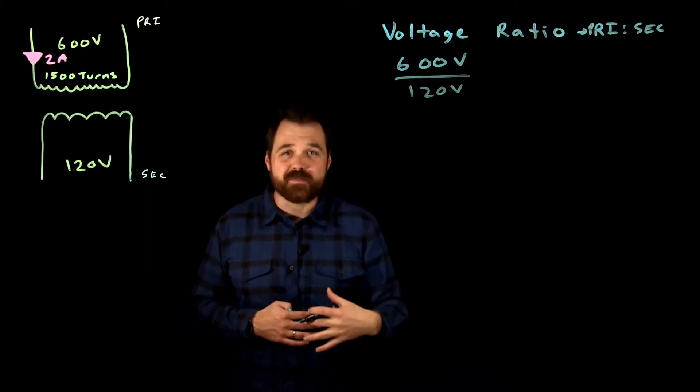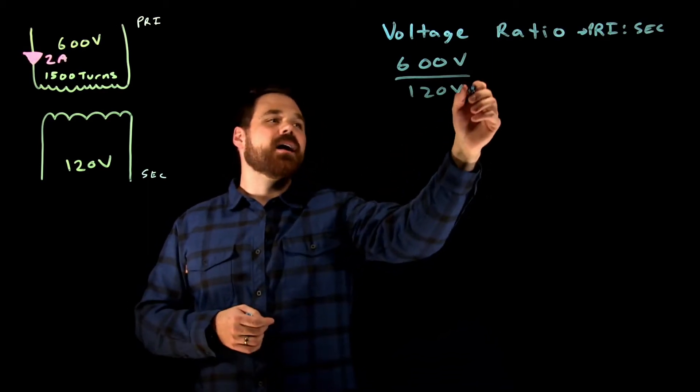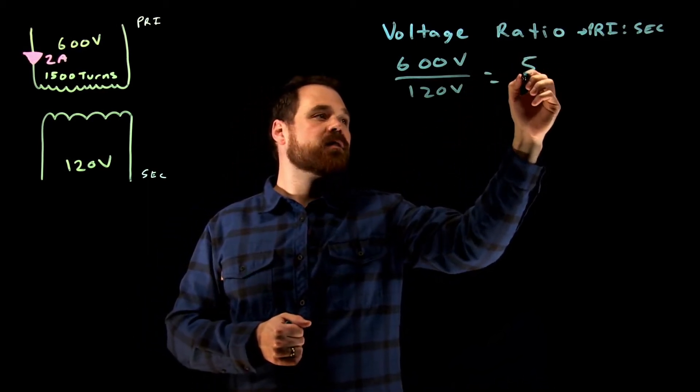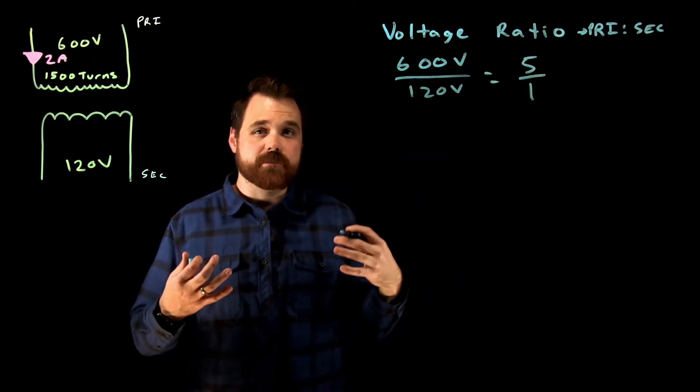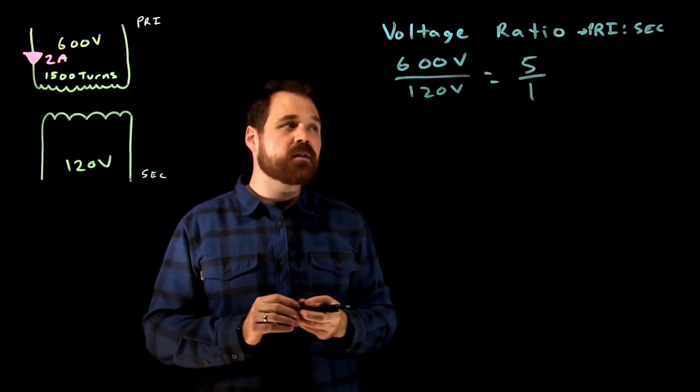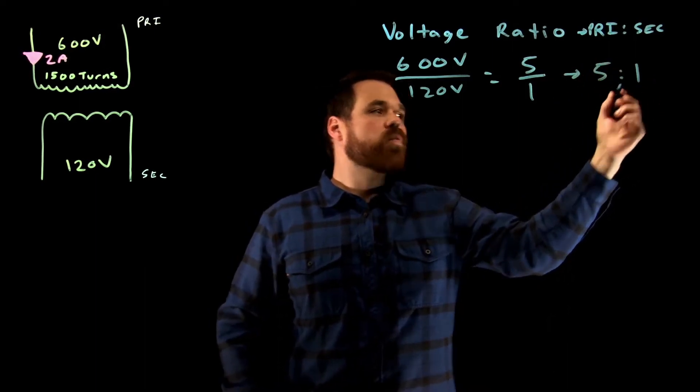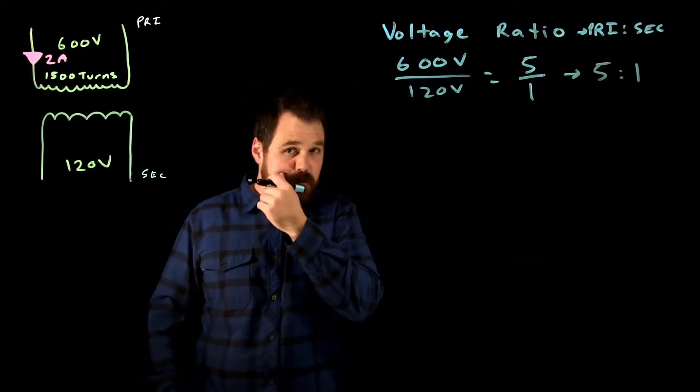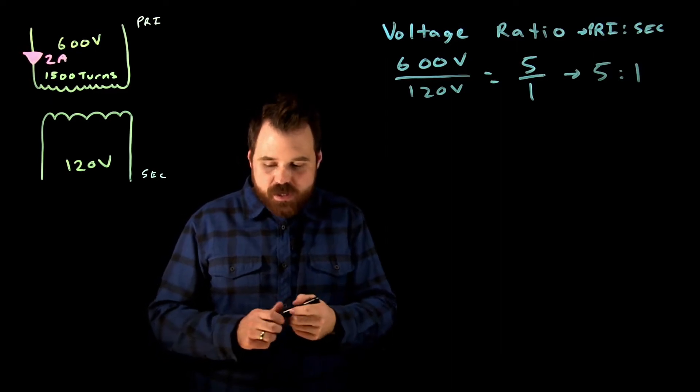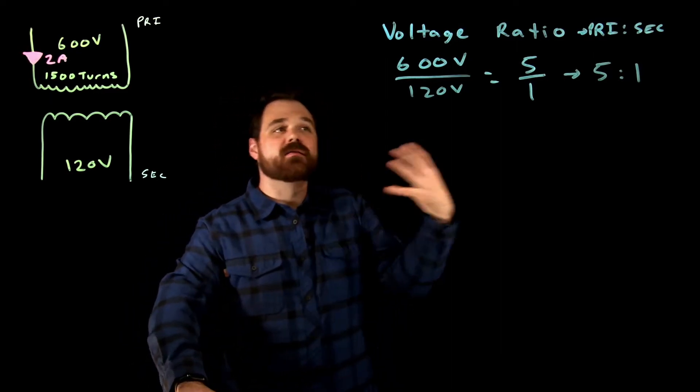Now when we simplify that ratio, that comes down to be a five to one ratio. So we would say that this transformer has a five to one voltage ratio. Awesome. So that's number one, our voltage ratio.